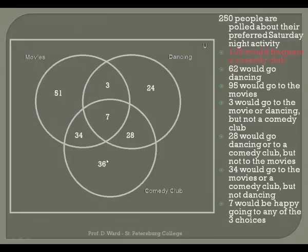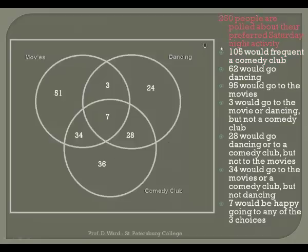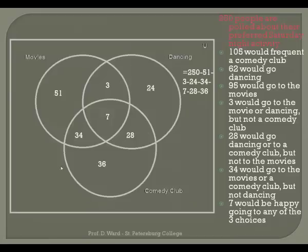I'm not quite done yet. I need to account for all 250 people, and not everyone is represented in the Venn diagram yet. So I take the 250 people and subtract away all those who chose dancing, the movies, or a comedy club — subtracting all of these numbers to get the people who wouldn't prefer any of those. That gives sixty-seven people outside all circles.